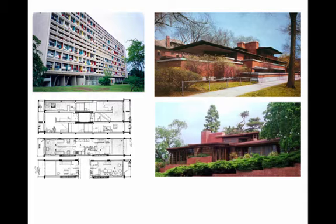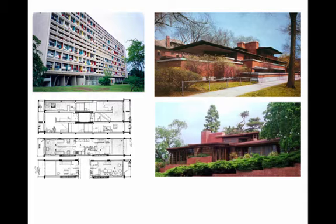This idea that the American democratic ideal allows the individual flourishing of each person is illustrated in the Roby House by Wright on top, and the Hannah House on the bottom, which is on a tri-hex grid. The next meaning we have for organic architecture is that it's an architecture of essences.